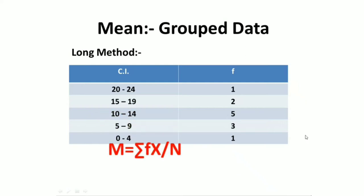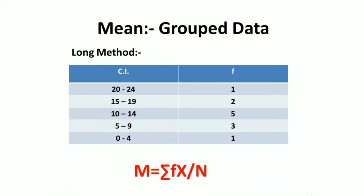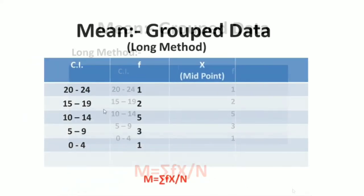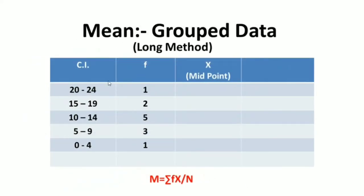The formula to calculate the mean by the long method is M equals summation of fx divided by n, where f is the frequency of the class interval and x is the midpoint of the class interval. So we have to first find the midpoints of the class intervals, then multiply them with the frequencies, then add them and get the summation, and divide by the sum of frequencies.